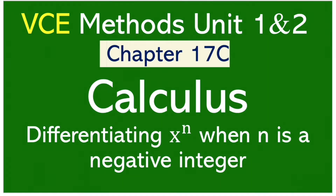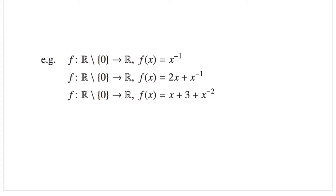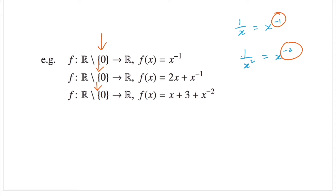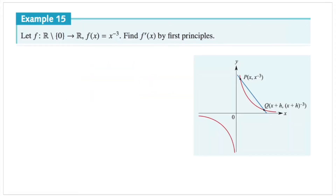In this exercise we're considering x to the power of n where n is a negative integer, and we'll see that we're using the same method and the rule is the same as well. We see negative powers quite often — in hyperbolas, for example, we know it's one over x, which can be written as x to the power of negative one. Also in truncuses, one over x squared is x to the power of negative two. This is why we define the domain to be any real numbers except zero, because the denominators cannot be zero.